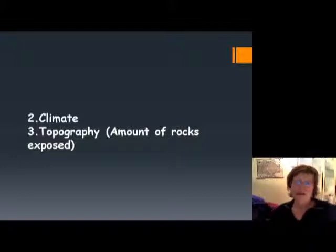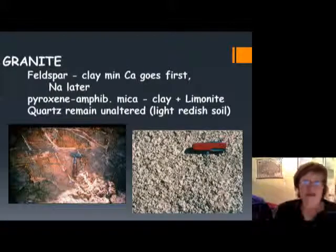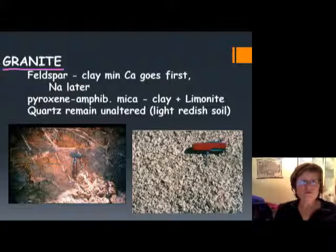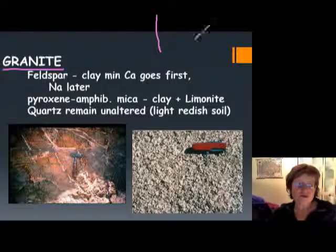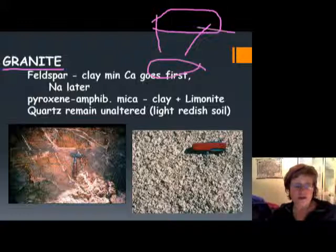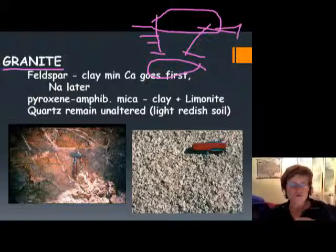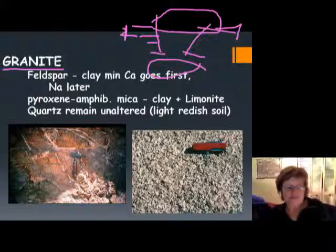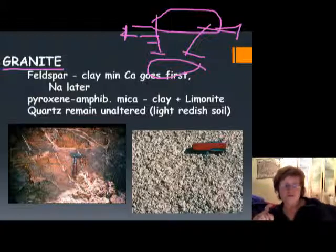We're going to continue from here, starting with igneous rocks in general. In igneous rocks, just about all the time we have feldspar. If it's a calcium-rich feldspar, that goes first during weathering — remember Bowen's reaction series, the top part weathers easier than the bottom. So the order is calcium plagioclase, olivine, pyroxene, amphibole, biotite — and sodium plagioclase is further down. Then pyroxene and amphibole go, biotite is last, muscovite even later, and K-feldspar stays a long time. But the one which never goes away is quartz — the most stable mineral on the Earth's surface.